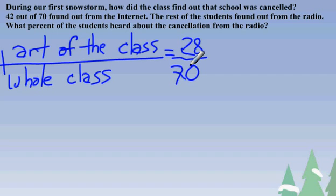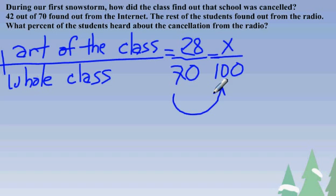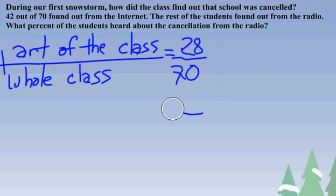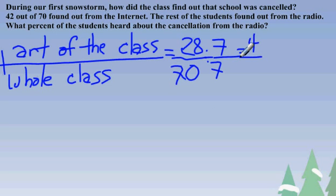To find percent, I set up the equation 28 over 70 equals x over 100. There are many ways to find this answer — we're going to explain two ways today. The first way is to see if 70 is a factor of 100. No, it is not. Another way is to take 28 over 70 and simplify it. 28 and 70 can both be divided by 7. 28 divided by 7 is 4, and 70 divided by 7 is 10. 10 is a great denominator because 10 is a factor of 100.